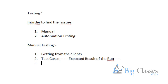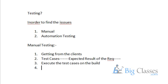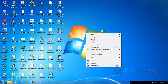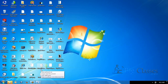Once the developers have prepared the build, they release it to the QA team. Once we get the build from the development team, we execute our test cases on the build. Based on the execution, we determine whether the application is working fine or not.